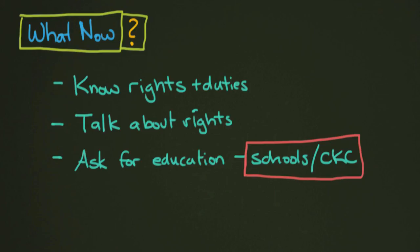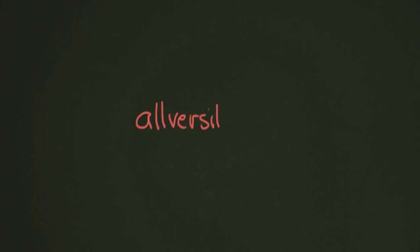So those are three ideas, but there's a lot more that one could do. Before you leave our course, please drop us a line and tell us what you think you can do about human rights and how you're going to do it. That was your course about human rights here at allversity.org. We are so glad you've been able to take this journey with us. Please go out, do good things, and be sure to remember that human rights are for everyone. Thank you.